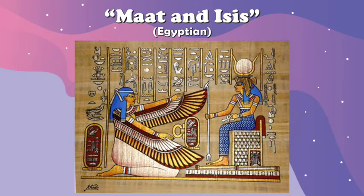Last is the painting of Maat and Isis. The painting shows the two goddesses, Maat and Isis. Maat, the goddess of truth and justice, is the winged goddess who is kneeling. Isis is the goddess seated on the throne.